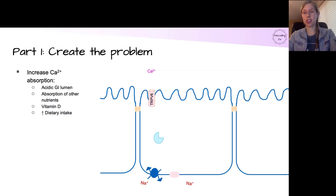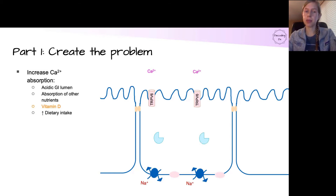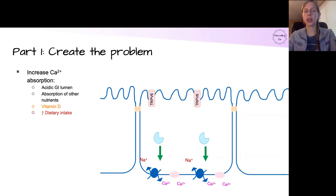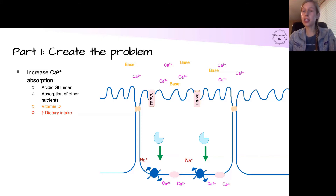To start calcium alkali syndrome, we have to create the problem: too much calcium plus some sort of alkaline substance. There are four major ways to increase GI calcium absorption, but the biggest perpetrator is increased dietary intake, specifically with absorbable alkaline substances — most commonly Tums or calcium carbonate. A patient on calcium supplements combined with an antacid like aluminum hydroxide or magnesium hydroxide saturates those transporter proteins.